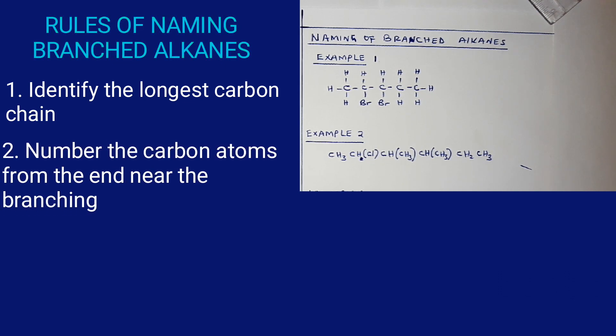Number two: number the carbon atoms from the end near the branching. This enables you to get the lowest number for the branches.